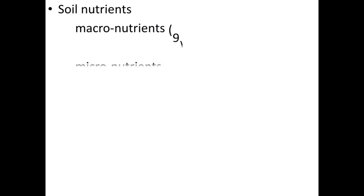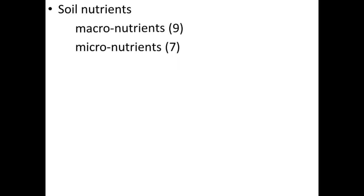Soil nutrients are divided into two categories: macronutrients and micronutrients. Macronutrients are available to plants in large amounts — there are 9 in total, including calcium, sodium, potassium, phosphorus, and nitrates. Micronutrients are required in smaller amounts — there are 7 in total, including boron, copper, nickel, zinc, and molybdenum.